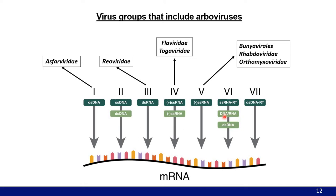Now let's talk about the actual viruses. The Baltimore classification scheme includes four of the seven virus groups that contain arboviruses, and most arboviruses are RNA viruses. The only arbovirus with a DNA genome is African swine fever virus, the single member of the Asfarviridae family. It has a very large DNA genome that is very poorly understood, is transmitted by soft ticks, and has been an especially big problem for pig farmers in Eastern Europe over the last few years.